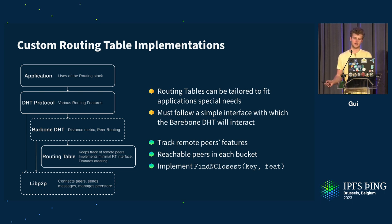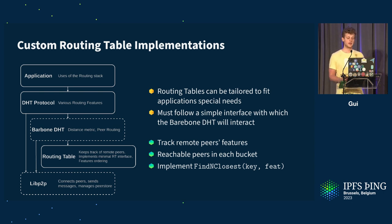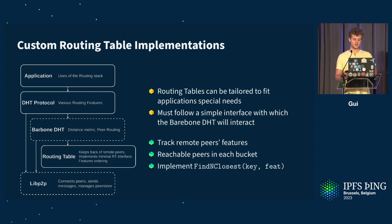This interface requires that the routing table tracks remote peer features, maintains reachable peers in every single bucket if possible, and implements a find-N-closest function to find the N closest peers to a specific key — and additionally, with a given feature.